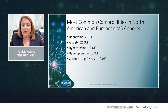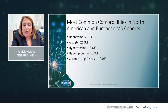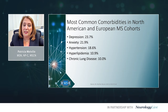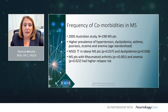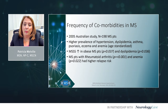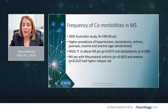From a North American and European cohort, depression and anxiety are the two most common comorbidities at 23% and 21% respectively. Hypertension is 18.6%, and hyperlipidemia and chronic lung disease are about 10% each. An Australian study of 198 MS patients showed higher prevalence of hypertension, dyslipidemia, asthma, psoriasis, eczema, and anemia. The MS severity scale was increased in obese MS patients and those with dyslipidemia. Patients with rheumatoid arthritis and anemia had a higher relapse risk.